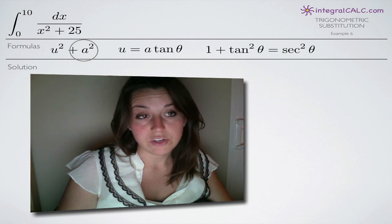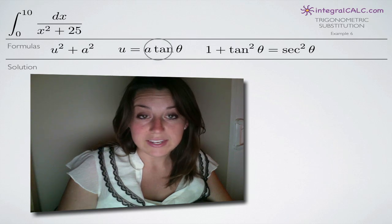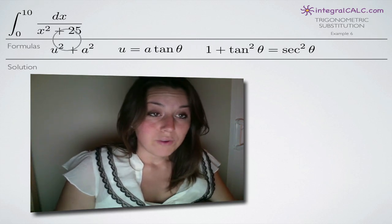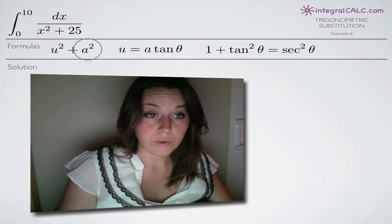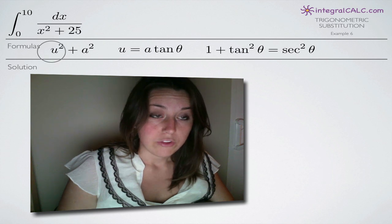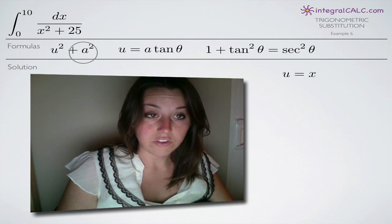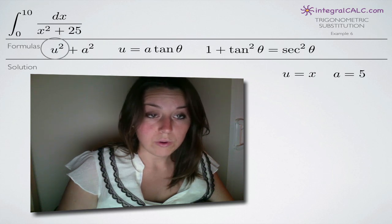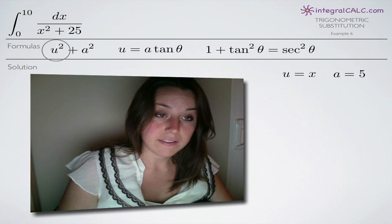If our integral is in this form, what goes along with that is the formula u equals a tangent of theta. The first thing we have to recognize is that our denominator x squared plus 25 is in the same form as u squared plus a squared. U is the variable, so u is going to equal x, and a is the constant, so a is going to equal 5. If you plug in x for u and 5 for a, you get x squared plus 25 — that's how we find u and a.